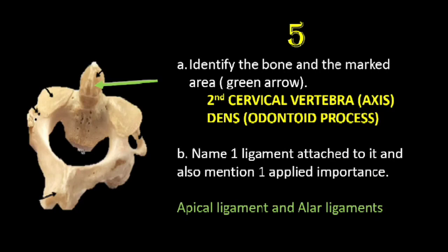One applied importance: in the case of death by judicial hanging, there is fracture of the dens of the axis, or rupture of the transverse ligament of atlas. During judicial hanging, the atlas is dislocated from the axis and compresses the spinal cord with fatal outcome. I hope these questions were useful for you; we will come up with further questions in coming sessions. Thank you.